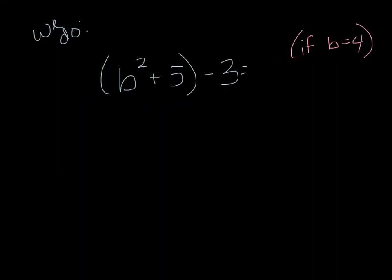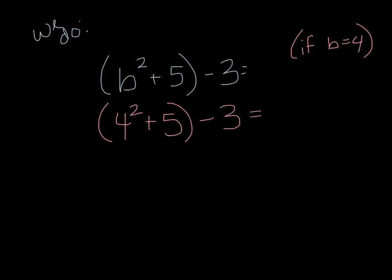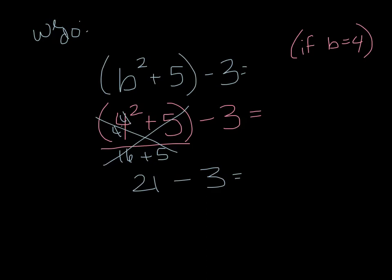We have b squared plus 5 minus 3 — the sum of b squared plus 5, subtract 3. We can't solve that until we know what b is, and the secret is that b equals 4. So we plug in: 4 to the second power plus 5 in parentheses, minus 3. Order of operations: parentheses first. Inside, exponents go before addition, so 4 times 4 is 16, then add 5 to get 21. Cross off what you did, bring down what you didn't. 21 subtract 3 is 18. There's your answer. That's kind of easy, isn't it?